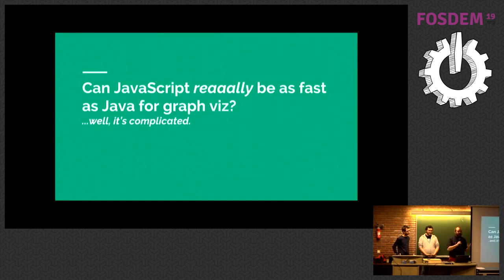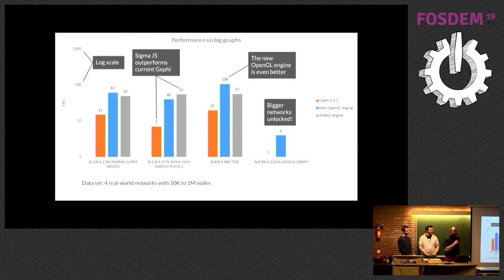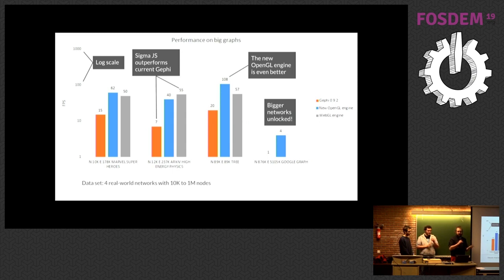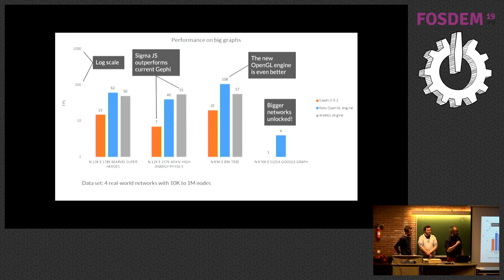Let's talk about speed in the web world. We've done a benchmark. I'm going to show a few charts with frames per second on the y-axis — pay attention that it's a log scale, so it goes 10, 100, 1000 frames per second. We test on different networks three engines: the current Gephi engine in OpenGL in orange, the new OpenGL engine just presented by Eduardo in blue, and the WebGL engine in JavaScript — basically Sigma — in gray. We didn't try to display labels in this benchmark. It was done on the same computer with an Nvidia chip, at a resolution of around 2000 by 1400.